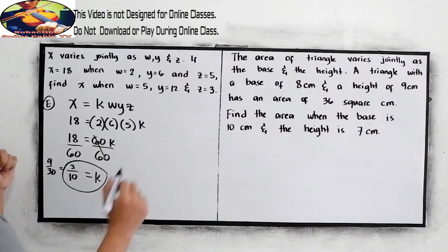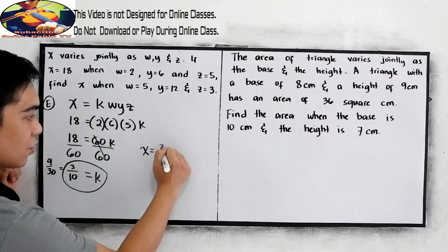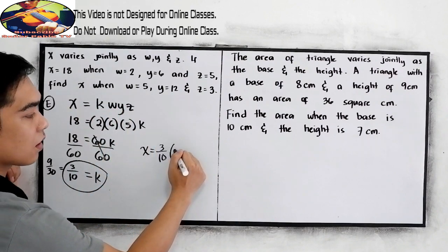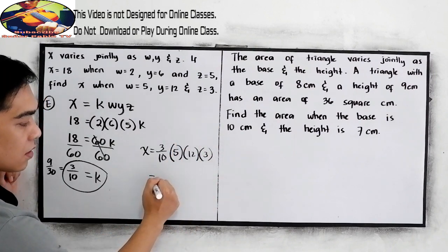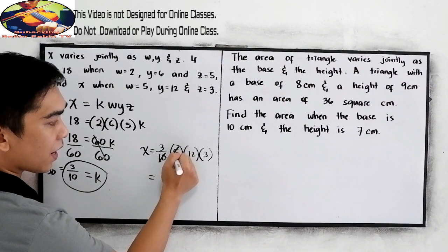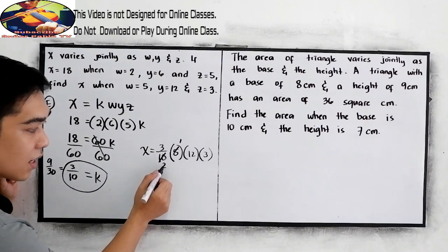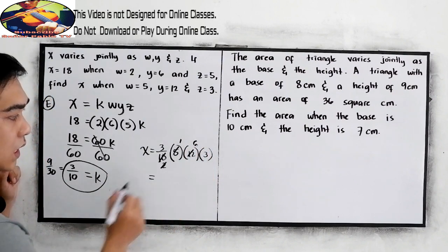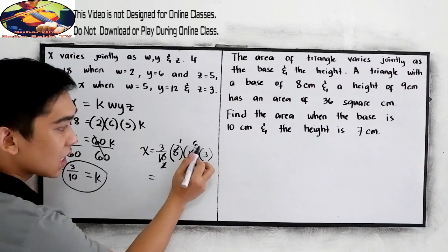We're going to find x. We need to substitute our k is 3 over 10, find x when w is 5, y is 12, and z is 3. Now let us use cancellation method. 10 and 5 can be cancelled out, this will become 1, 10 will become 2. We can cancel 2 and 12, 12 will become 6. Now we have 3 times 1 times 6 times 3.